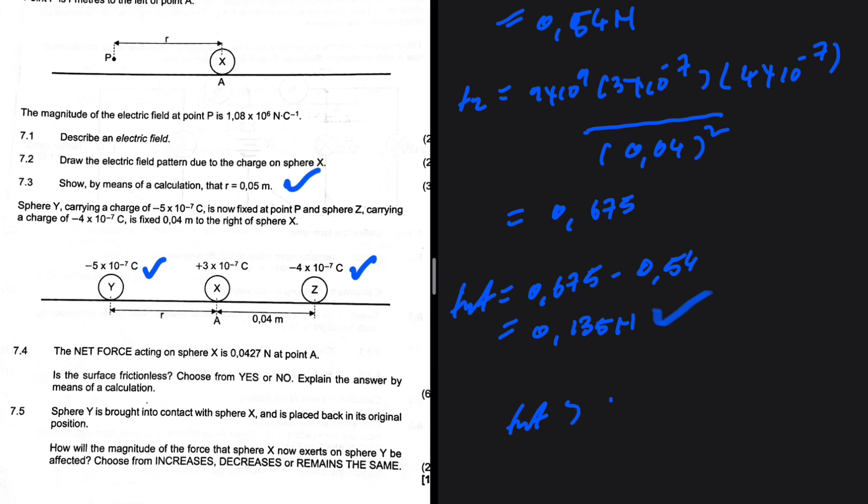The net force that we get is greater than 0.0427. The net force is what is given to us, this is the force as a consequence of Z and Y. So the net force is actually less than 0.67 newtons. So we can conclude here and say that there is friction, as the net force is less than what we find when we use the electrostatic forces that are acting on the object.